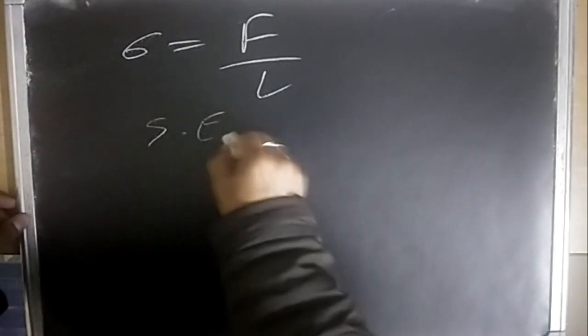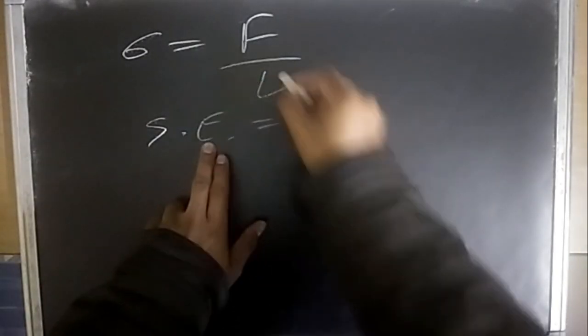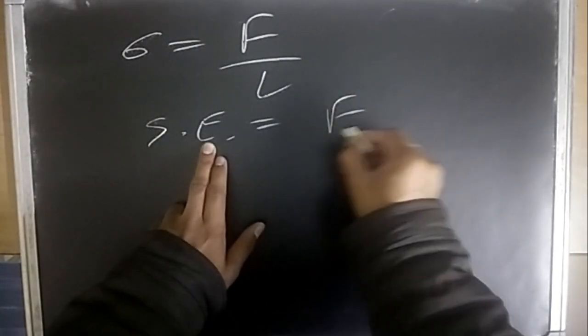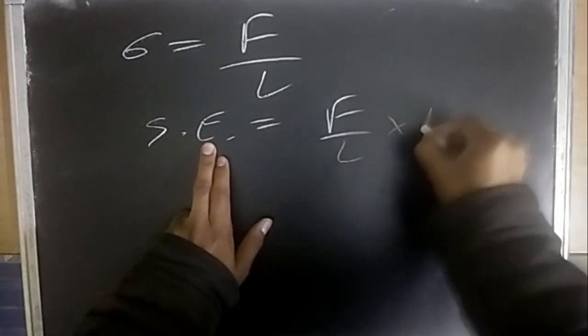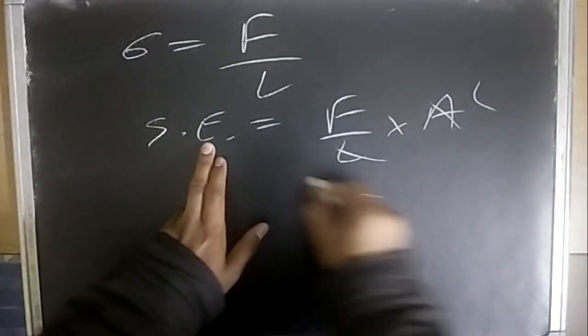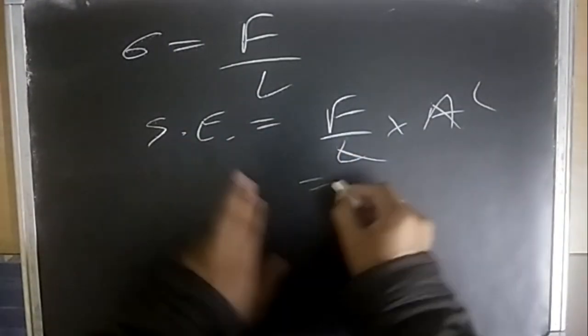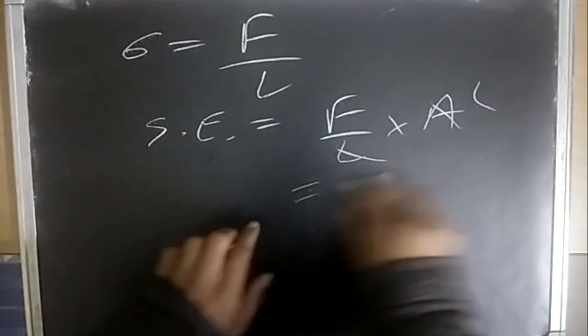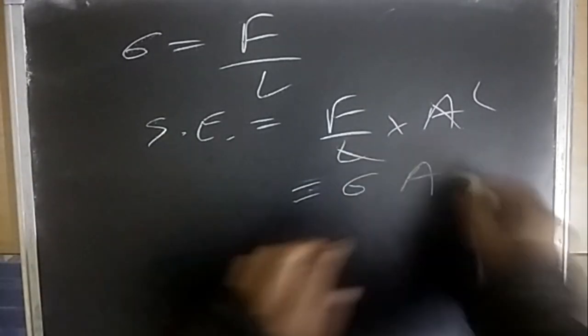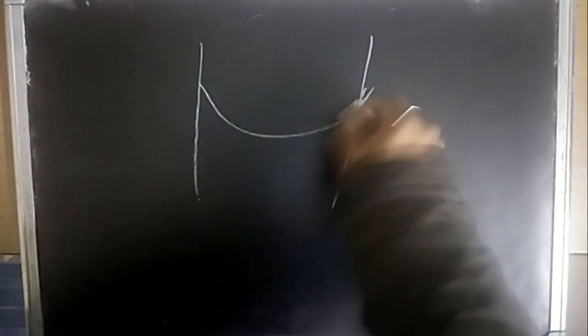Surface energy equals force per unit length into area, so force times length is energy or work. In this case, surface energy is sigma times area (σ·A). Next, capillary action: for water, which is rising in a capillary, the height it rises to is derived from ΔP = 4σ/d = ρgh.